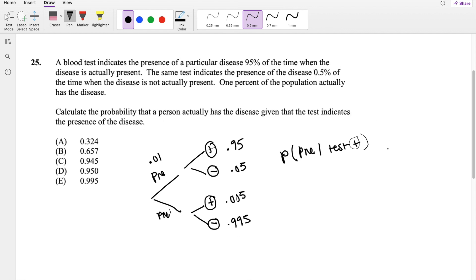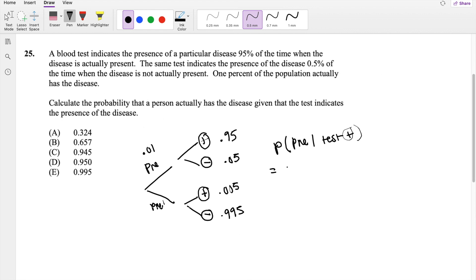Okay, so then this again is a conditional probability formula. It's going to be probability that the disease is present and the test is positive divided by the probability of testing positive.